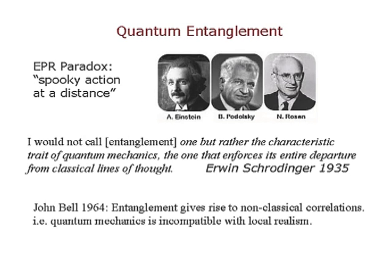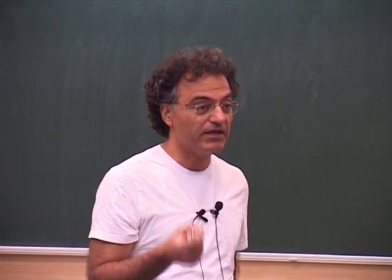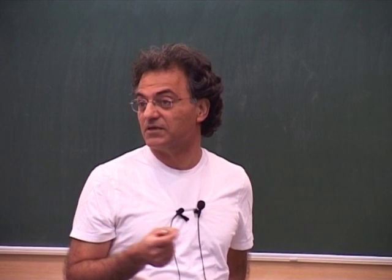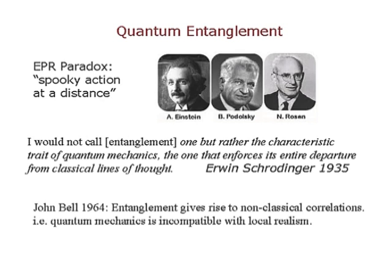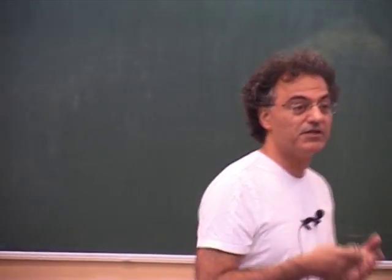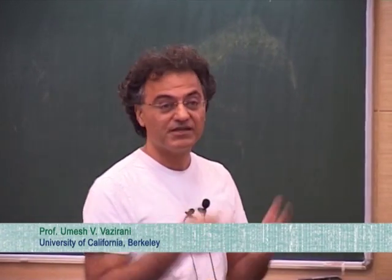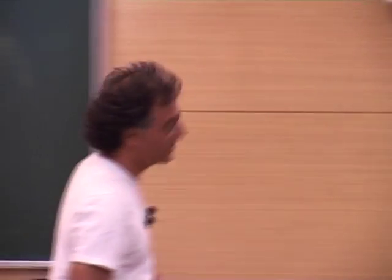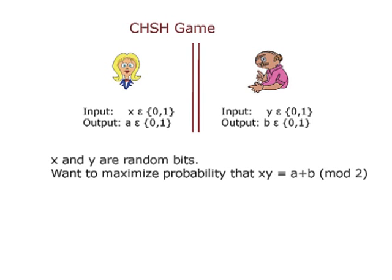These papers both came about in 1935, and it wasn't until about 30 years later that John Bell realized there was a real consequence to entanglement. Instead of doing thought experiments like EPR, you could use entanglement as the basis of a real experiment — there was actually a consequence that distinguished it from the classical world, from classical correlations. These non-classical correlations show that quantum mechanics is incompatible with the local realism view Einstein was promoting.